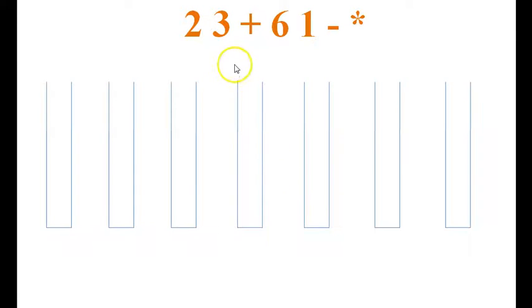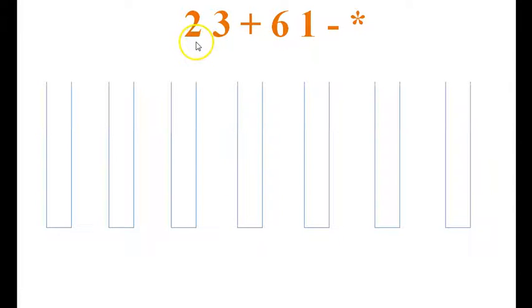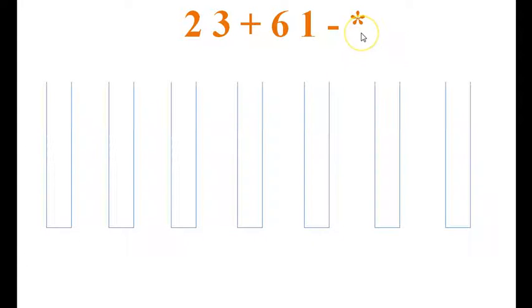We now move on to solving a particular postfix expression. We have to find the value of this expression: 2 3 plus 6 1 minus multiplication.